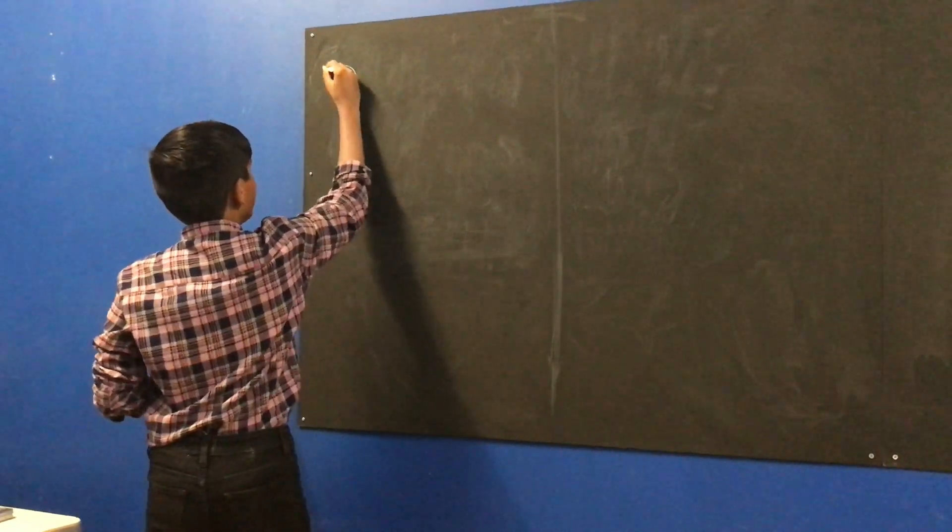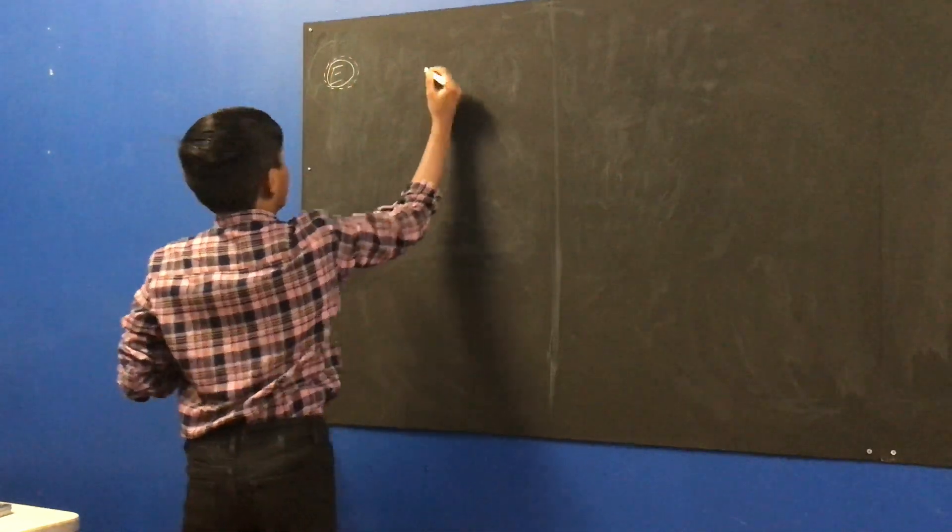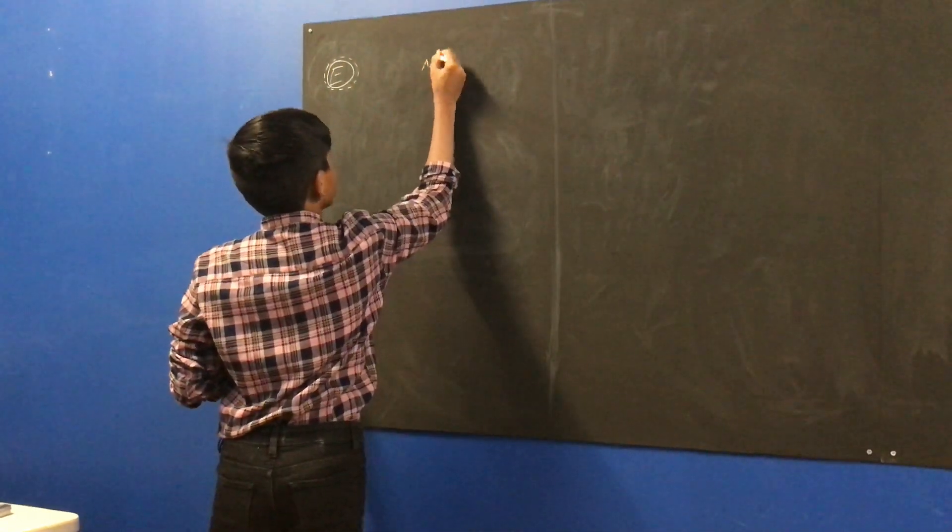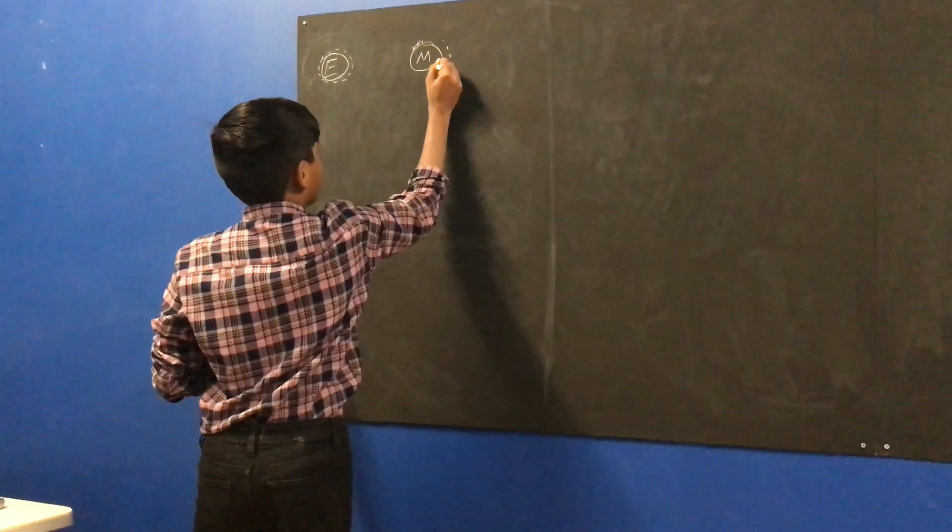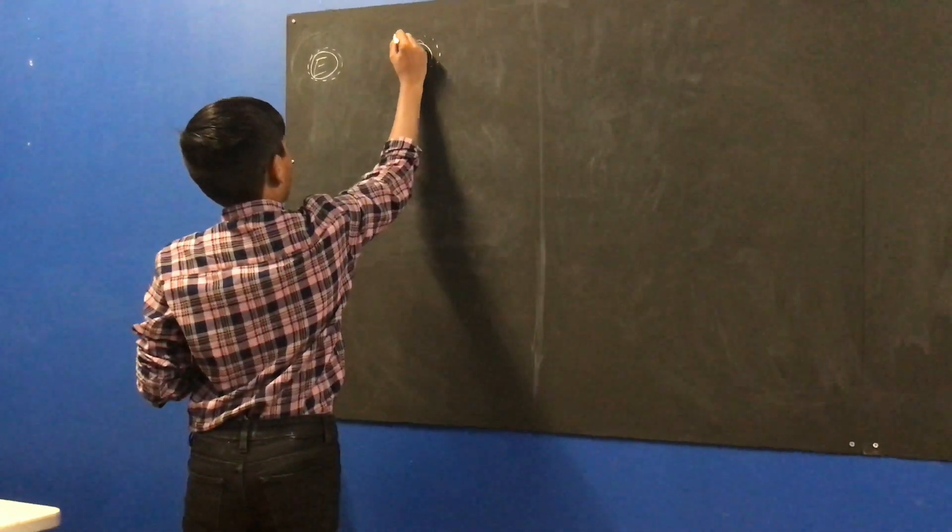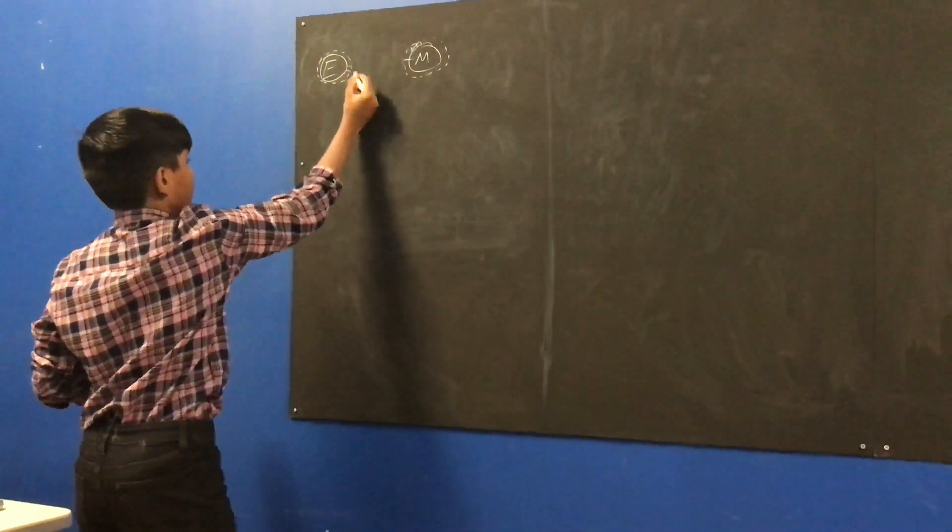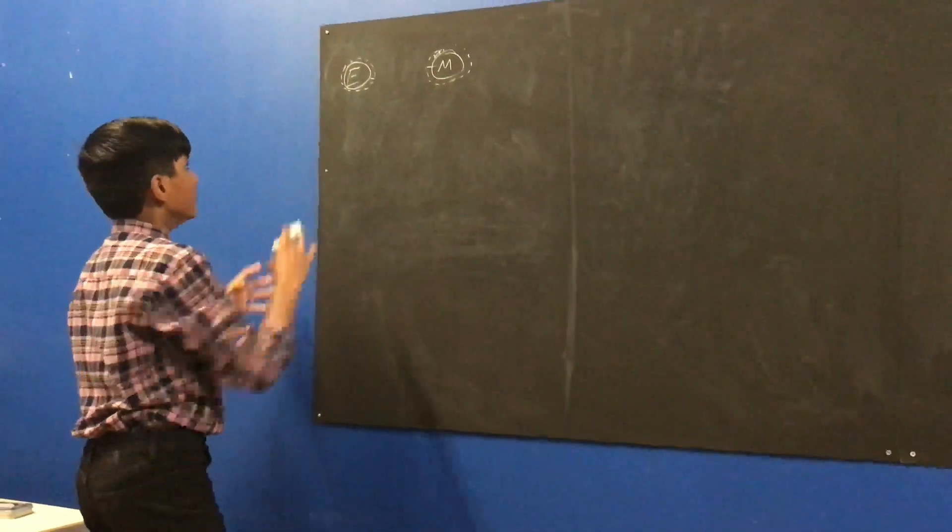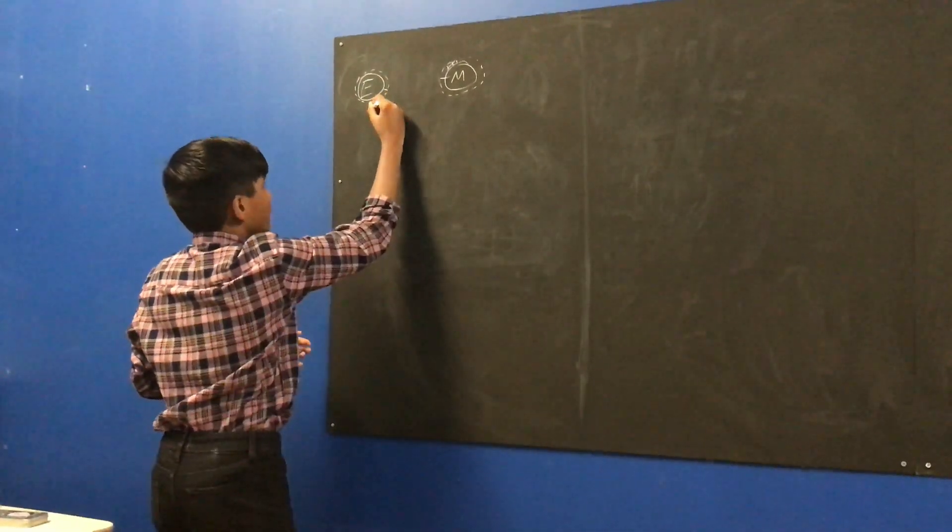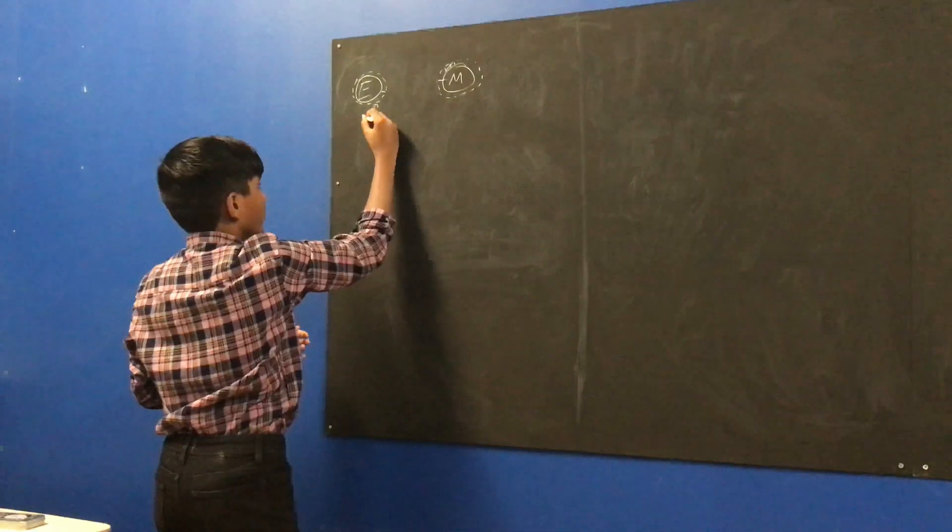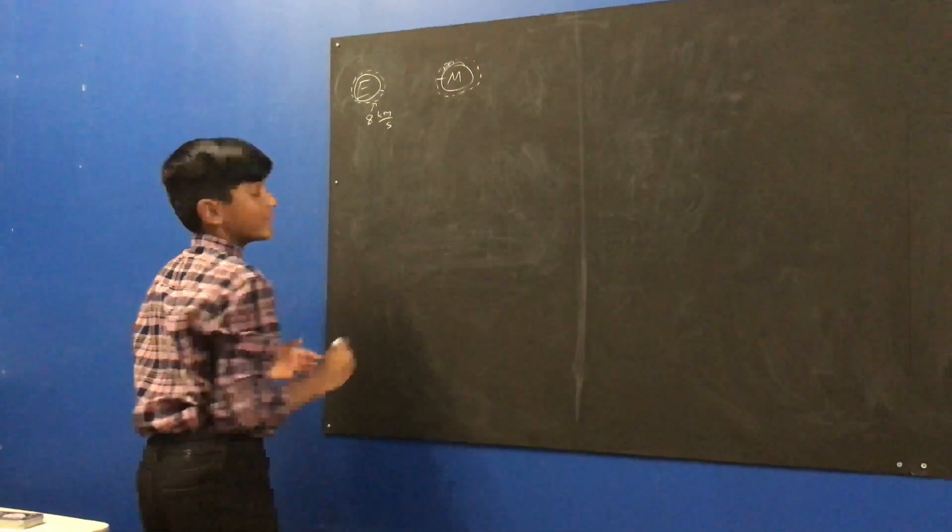So, if this is the Earth, and this is Mars, now this distance here is not necessarily accurate in terms of scale, but just have a look at this orbit here. A spacecraft orbiting the Earth would be going at 8 km a second.